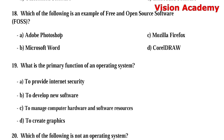Question number 18: Which of the following is an example of free and open source software (FOSS)? Option A: Adobe Photoshop. Option B: Microsoft Word. Option C: Mozilla Firefox. Option D: CorelDRAW. The right answer is Option C, Mozilla Firefox.